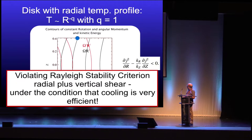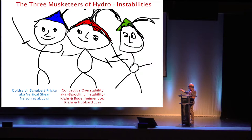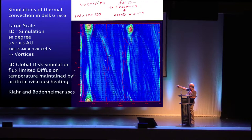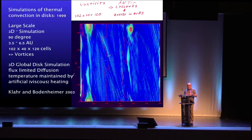This is basically a violation of the Rayleigh criterion but using the vertical component as well. The second instability I have spent quite some time on is a baroclinic instability, which I now prefer to call a convective overstability. I first saw it many years ago in what I called a high-resolution simulation — in 1999, plotting vorticity in the disk at 100 by 40 by 120 cells, running on a supercomputer in San Diego. While aiming at thermal convection, I suddenly found vortices and then spent years trying to understand where they came from.